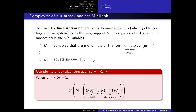Sometimes we are underdetermined — we don't have enough equations. But on the other hand, sometimes without multiplying the original bilinear equations, we already have far too many equations. To make the attack less expensive in that case, we can remove some columns of the original set of matrices we are searching for a small rank combination of. This gives fewer variables and fewer equations, and we try to remove as many columns as possible to minimize the complexity.